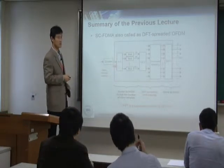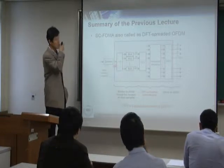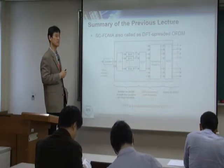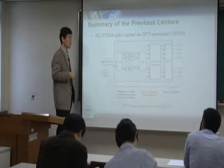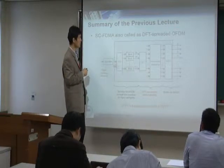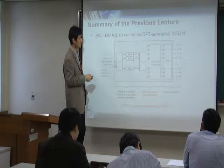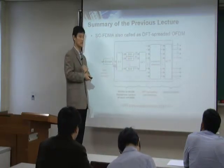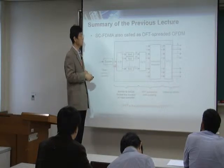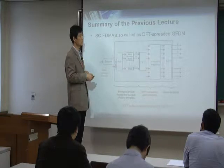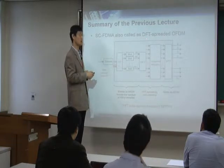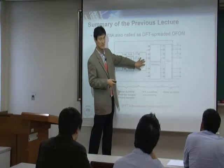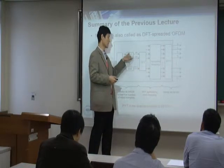We also discussed SC-FDMA (Single Carrier FDMA). The motivation was OFDM's peak-to-average power ratio (PAPR) problem. SC-FDMA adds one additional DFT block before the IFFT — that's why it's called DFT-spread OFDM. If you remove the DFT block, the system is identical to OFDMA. The DFT converts time-domain symbols to frequency-domain symbols, effectively spreading each symbol's energy across frequencies.